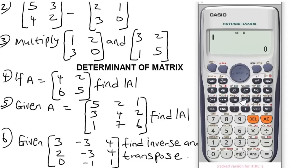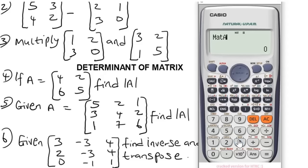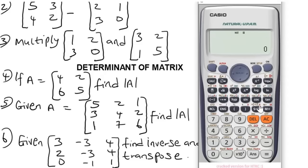To find the inverse of the matrix, go to Shift, button 4, select Matrix A (option 3), then press the x⁻¹ button. It will indicate the inverse of Matrix A, and pressing Equals will give you the inverse of the matrix. So basically, we can now solve addition, subtraction, multiplication of matrices, determinants of 2 by 2 and 3 by 3 matrices, and transpose and inverse of matrices using the Casio fx-991ES Plus calculator in seconds.